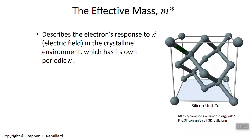Today I'm going to cover a concept that often comes off as rather abstract, but in fact is extremely concrete and of great importance, and that's the effective mass of charge carriers. Now to begin with, let me make it clear that an electron's mass is 9.11 times 10 to the minus 31 kilograms, period. But the effective mass describes how massive the electron appears to be in the crystalline environment.